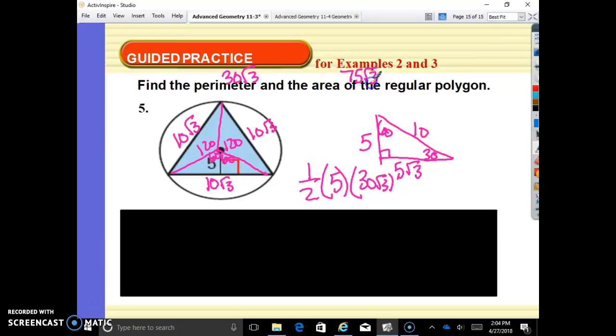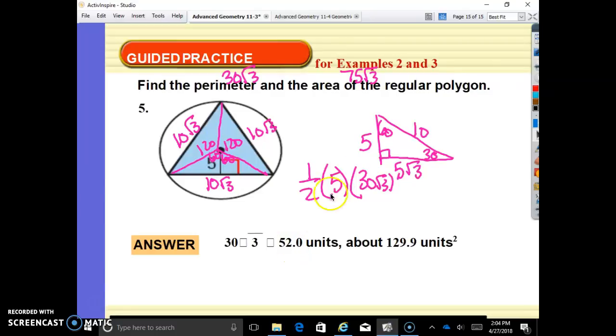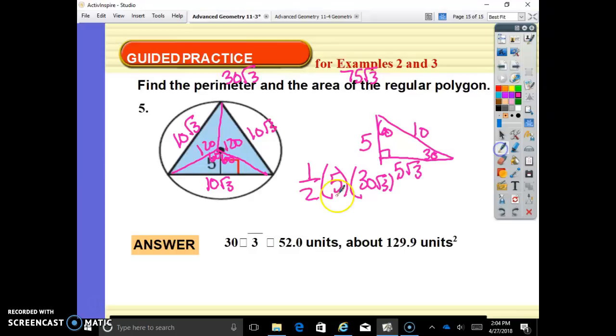And then we can actually take our calculator and do 3 square root button times 30 equals, and that is going to be approximately 52. And then if we do 3 square root button times 75, we'll get approximately 129.9.